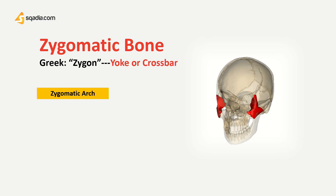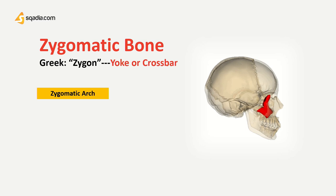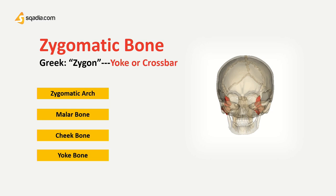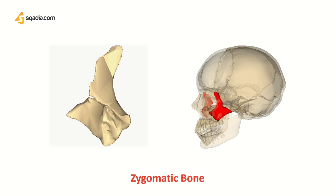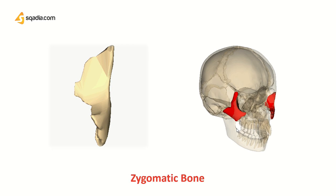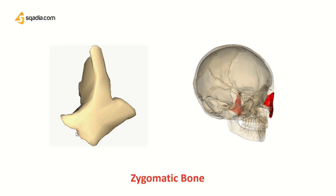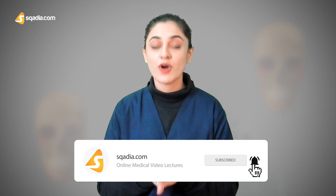Some names are the zygomatic arch, the mallard bone, the cheekbone and the yoke bone. As you can see here, the zygomatic bones are two small quadrilateral bones present in the upper and lateral part of our face. It has four edges, which is why it is referred to as quadrilateral — quad meaning four. The bone forms the prominence of the cheeks, and it is a quadrilateral bone of the skull that participates in the formation of the skeletal framework of the orbit and our cheeks.